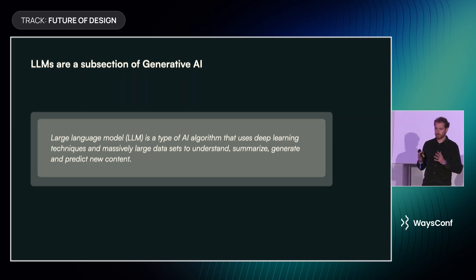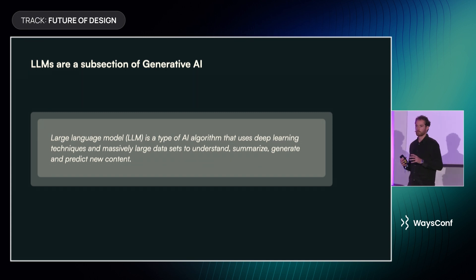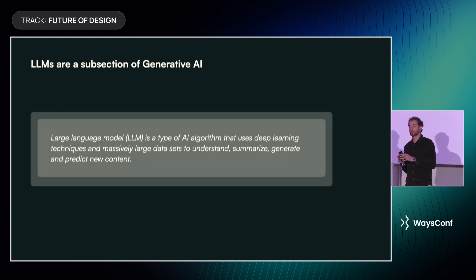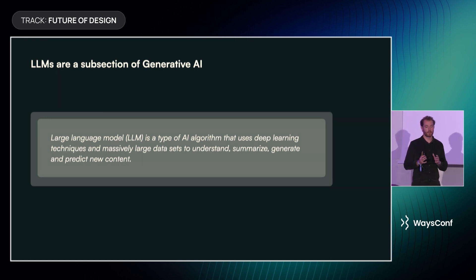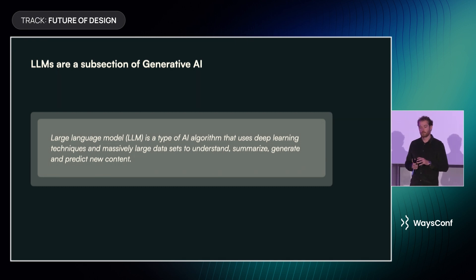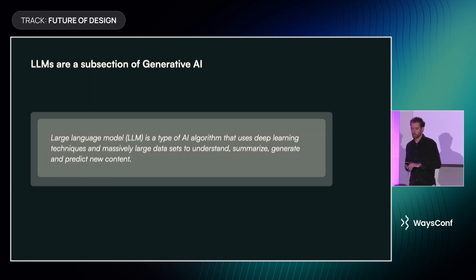We just heard in the previous talks a detailed explanation of large language models, so I won't go into detail here. But it's important to have a common understanding of what an LLM is when talking about generative AI, because the terms are often used simultaneously. Large language models, or LLMs, are a type of AI algorithm that uses deep learning techniques and massively large datasets to understand, summarize, generate, and predict new content.